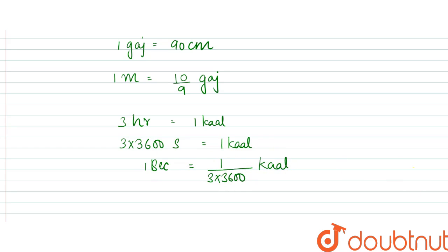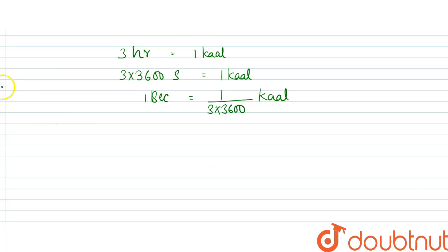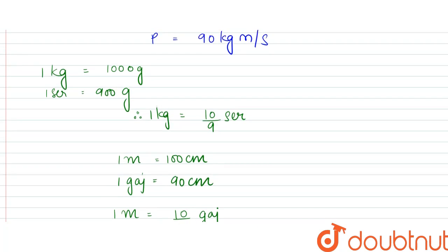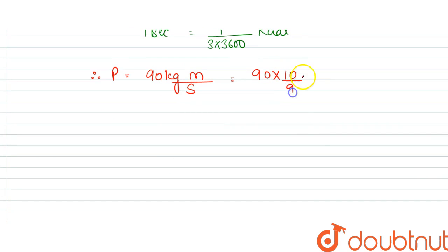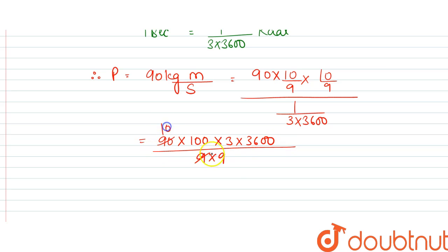Therefore, the momentum of 90 kg meter per second would be equal to 90 into 10 by 9 ser into 10 by 9 gauge divided by 1 by 3 into 3600 kal. This would turn out to be equal to 90 times 10 times 10 times 3 times 3600 divided by 9 times 9.